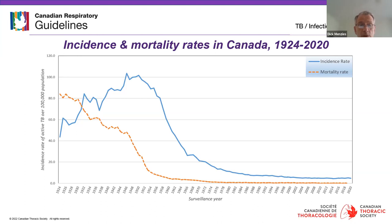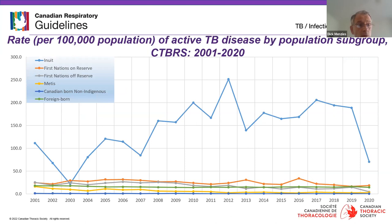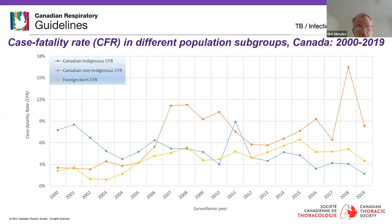Everyone is aware of the huge disparities in TB rates across different populations. Rates are highest among the Inuit — there is a fall-off in 2020 largely felt to be related to pandemic under-diagnosis — then First Nations, and then the foreign-born. Canadian-born non-indigenous rates are very low. It's a disease that mirrors other disparities, and TB still causes death as well as substantial morbidity and disability.